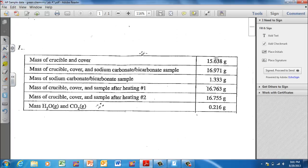What I have here is some sample data. Here's the mass of the crucible and the cover, the mass of the crucible, cover, and initial sample, what this sample was initially, after heating one and after heating two.